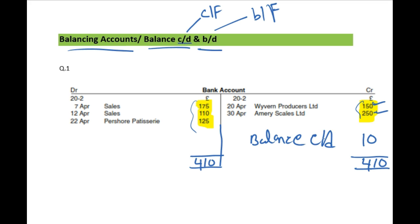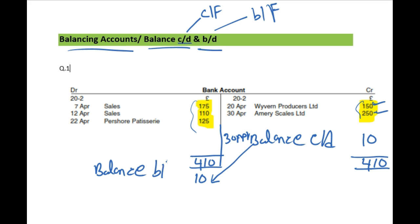We call it balance c/d — balance carried down. The date is always the last date of that particular month, which is 30th of April. That same balance c/d becomes balance b/d on the other side of the account after the total. It is 10 pounds, called balance b/d — brought down — and the date is the first of the next month, the 1st of May. That's how you do your balance c/d and b/d.